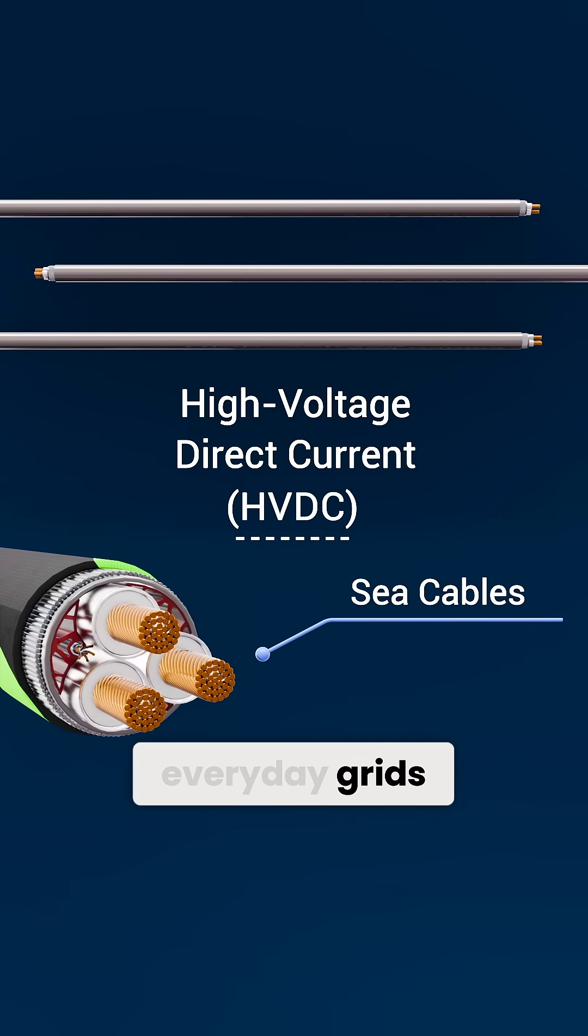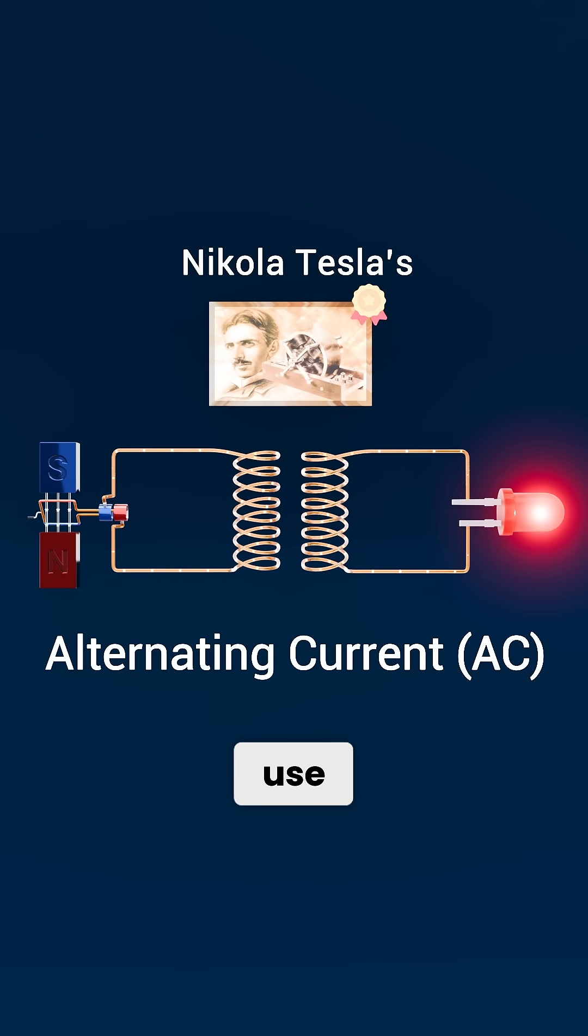But for everyday grids, AC remains in use thanks to its natural compatibility with transformers.